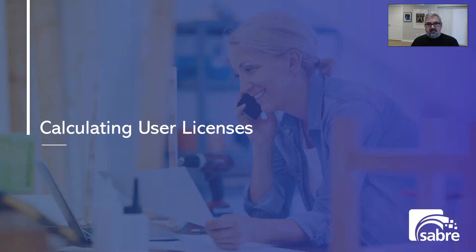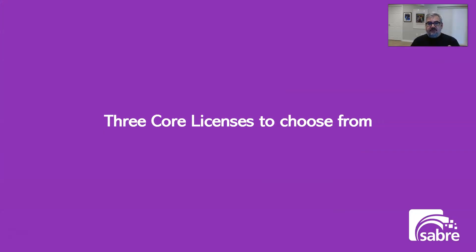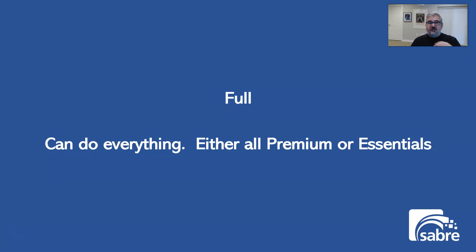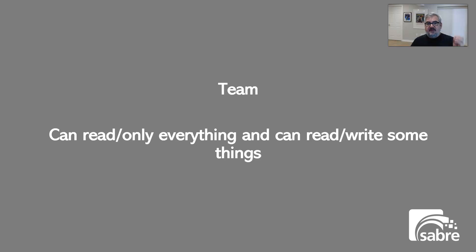Today's video is about how to calculate how many user licenses you need in Business Central. This is a tricky thing — customers often come to me and say 'I need 25 full user licenses' and I always question whether they're accurate. There are three core licenses to choose from, plus premium versus essentials. The full, the team, and the device are the three types. The full license can do everything in the system — it's really the most unlimited license, and all full users must be either premium or essentials.